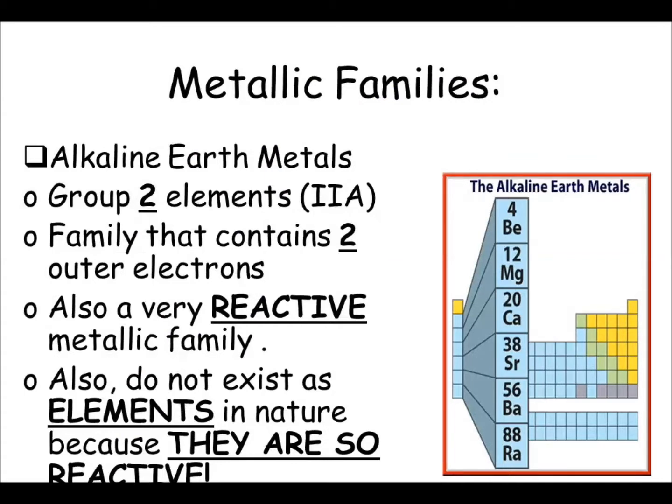Now let's talk about the alkaline earth metals, Group 2 on the periodic table, or 2A as some periodic tables call it. This family contains two outer electrons, so that last ring would contain two electrons. They're also a very reactive metallic family and they also do not exist as elements in nature because they are so reactive.